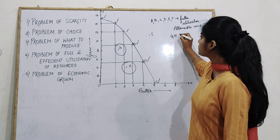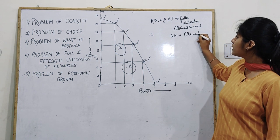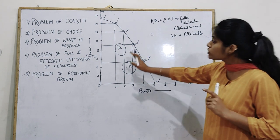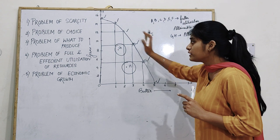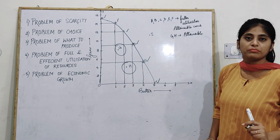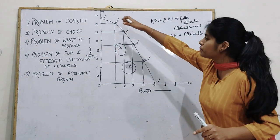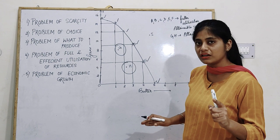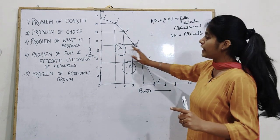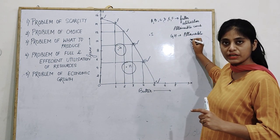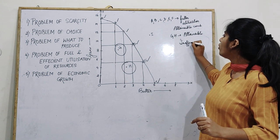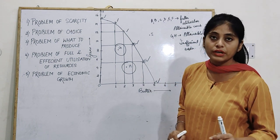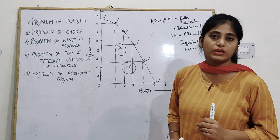G and H are attainable combinations — we can attain these combinations — but here we are not using the resources completely. Because the points lie inside the PPC curve, G and H are attainable but inefficient, representing under-utilization of resources.